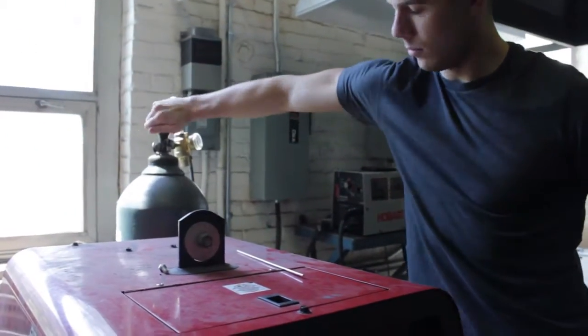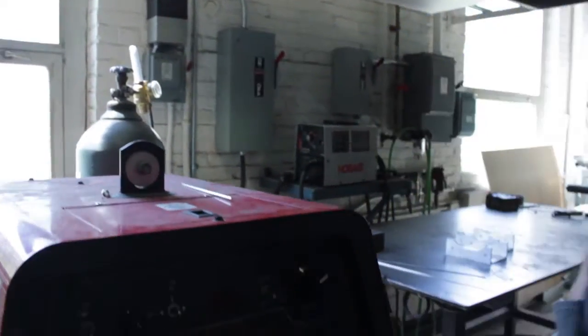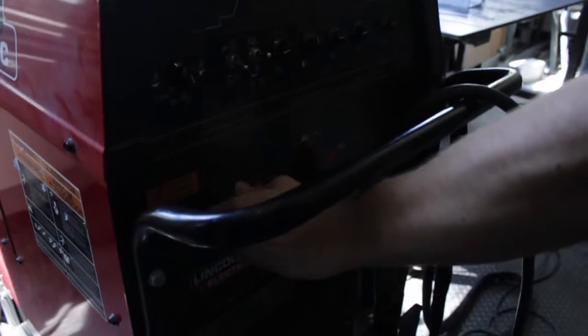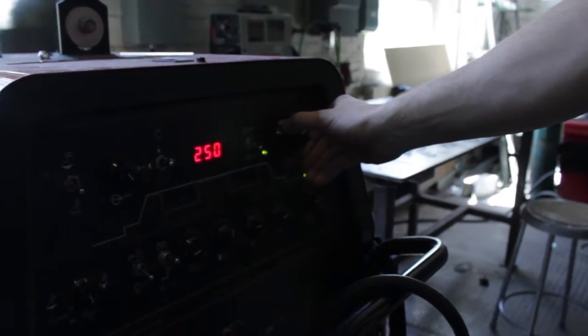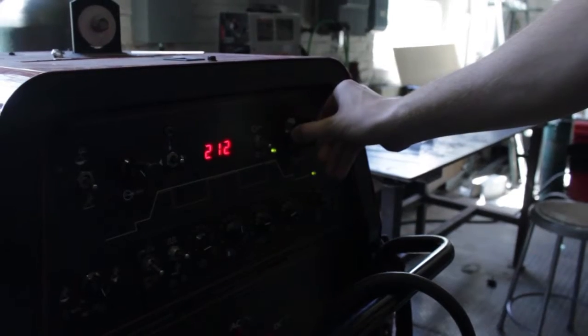Now you can turn on the welder and open the gas valve. Adjust the amperage to the thickness of the aluminum you are welding. A good rule of thumb is to adjust the amperage to the thickness of the metal in thousands.